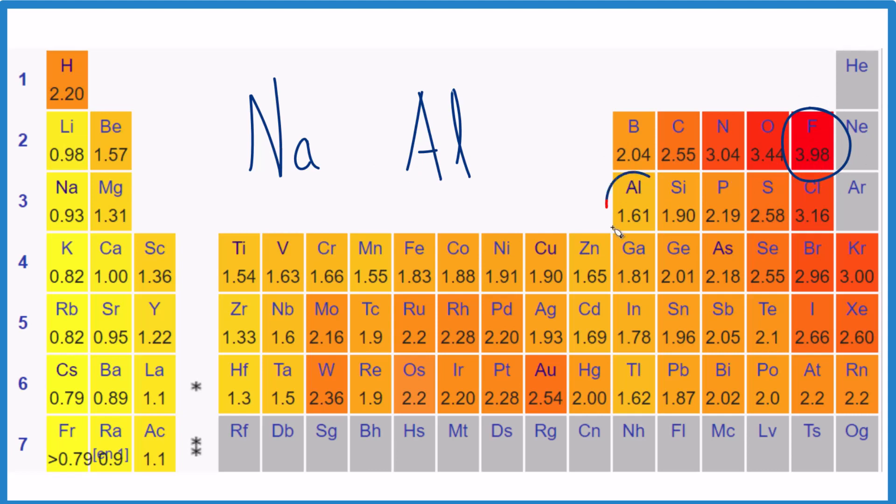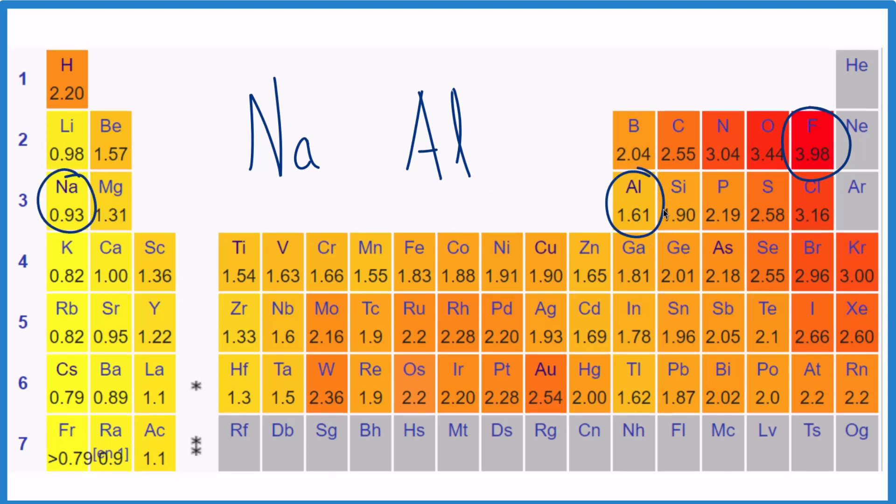So right here is aluminum, and over here is sodium. So since aluminum right here is closer to fluorine, we know that aluminum is more electronegative than sodium.